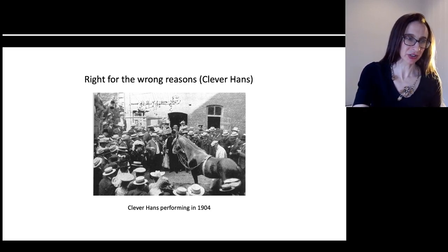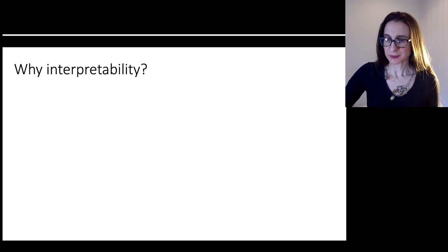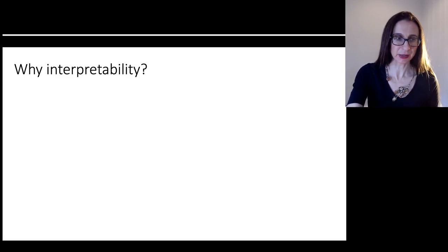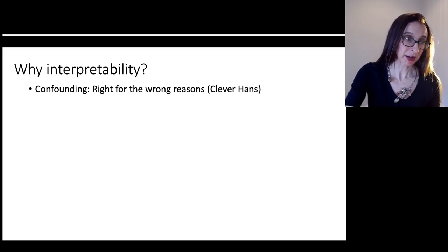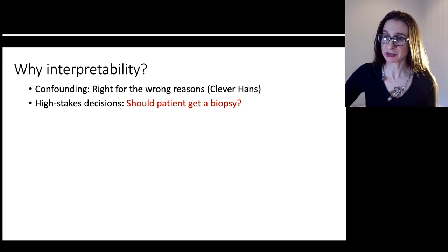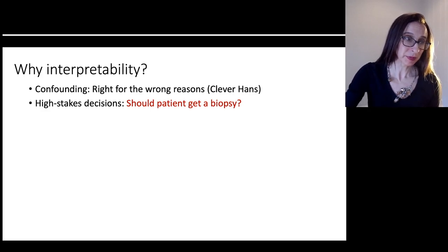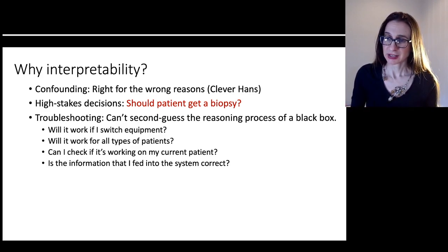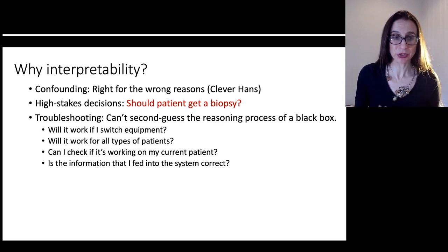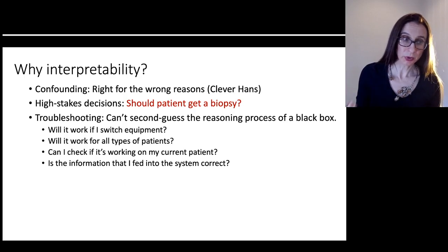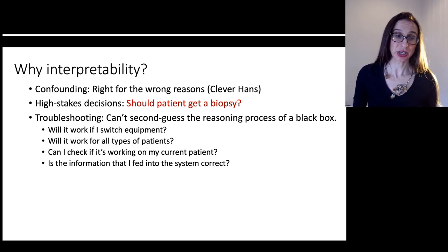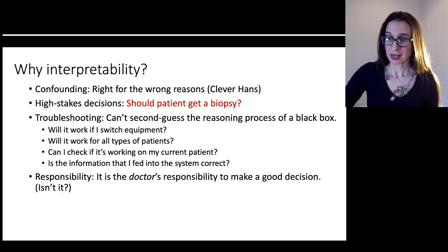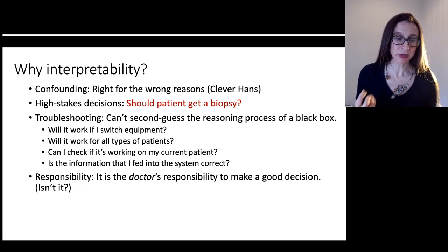So why is interpretability important? Interpretability helps you detect confounding like in the Clever Hans phenomenon. It helps with high-stakes decisions where a human really needs to know the reasoning process. It helps you troubleshoot — you can't second-guess the reasoning process of a black box because you don't know what it is. And if it's a black box, you don't know: will it work if I switch equipment? Will it work for all types of patients? Can I check if it's working on my current patient? Is the information I fed into the system correct?